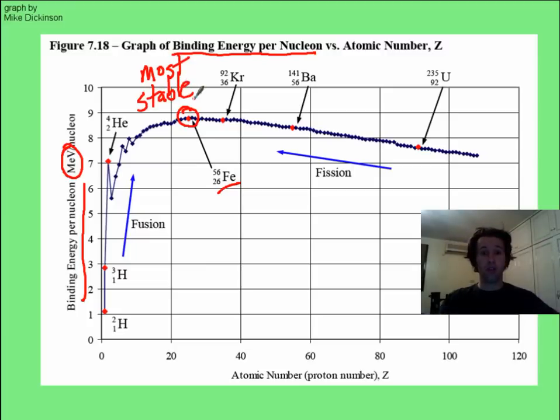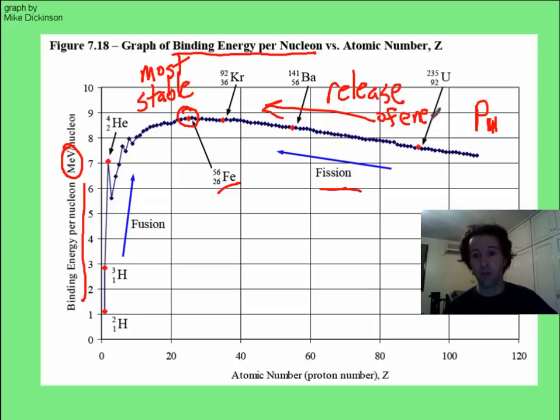And as you go up on this graph, you get more and more stable elements. Now, if you're over here with the massive elements, like uranium and plutonium, that's Pu for sure, as you start taking these massive elements and you start splitting them up, you get smaller elements, like barium and krypton and iron, and those will become more stable. And whenever you're becoming more stable, you will release energy. So as you fission things and split them apart into smaller atoms, you are going to have a release of energy as you move this way with fission.